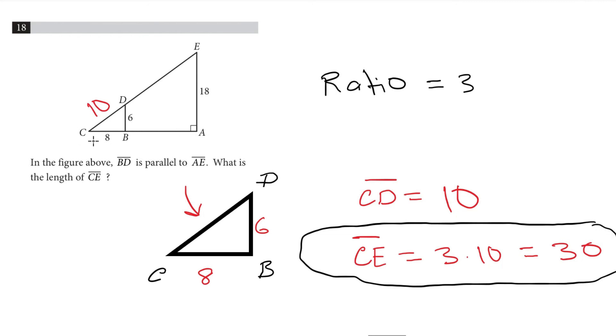And let's find CA for example. Well, we know that CB is equal to 8. We know that the ratio is 3. And again, in order to find CA, just multiply CB by 3. So 8 times 3 is 24. So CA would be 24 units long.